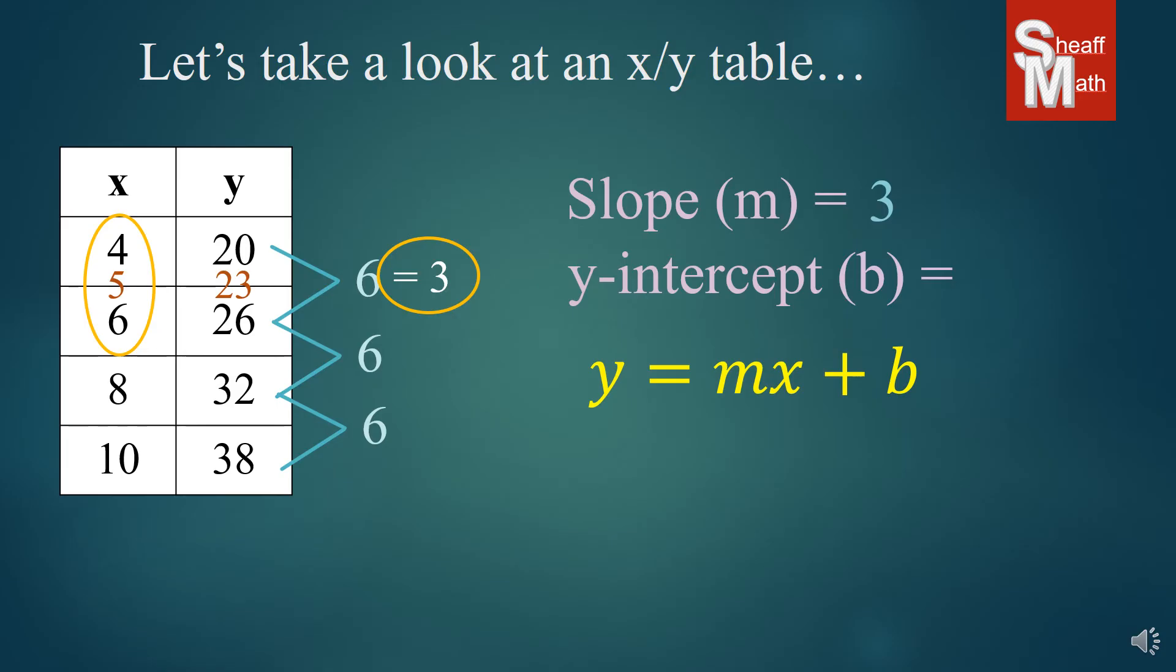All right. The y-intercept. Well, we don't have the 0 term. And so we're going to have to find it. So since we start at 4 here and our slope is 3, then we're going to have to go backwards 4 times to get to 0. So we're going to subtract 3 from 20 4 times. And so we end up getting 8. So 0, 8 is the y-intercept. So 8 is our b. We put those in there and we have our equation.